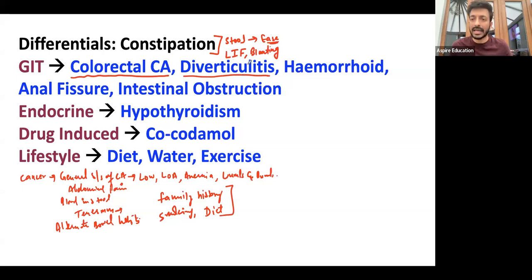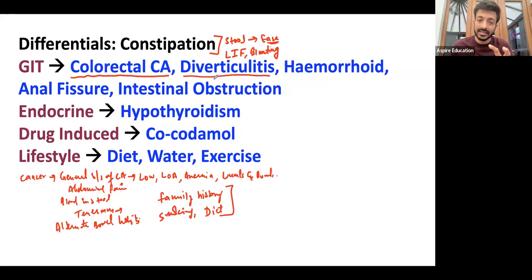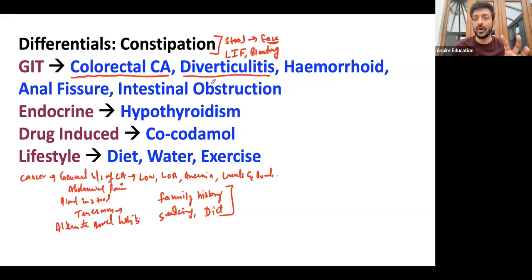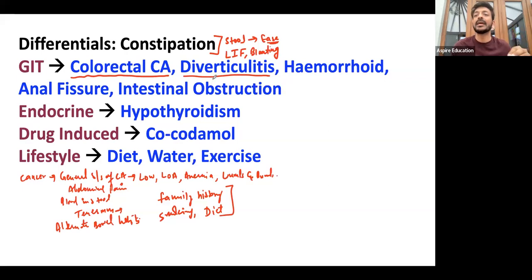Ask about the patient's diet, because the main treatment for diverticulitis is a high fiber diet — that is really important. When it comes to investigations, do not mention colonoscopy as your initial investigation for diverticulitis, because it increases the chances of perforation. Do routine investigations, an ultrasound scan, and possibly a CT scan. Colonoscopy is delayed — not contraindicated, but not done routinely. It would be the last thing to do in a case of diverticulitis.